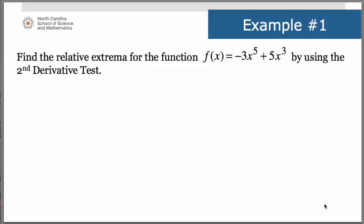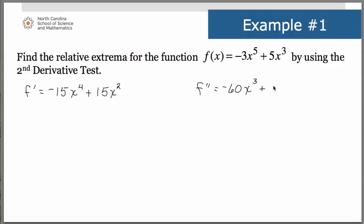Let's look at a couple of examples. In this first one we're asked to use the second derivative test to find the relative extrema for the function f(x) = -3x⁵ + 5x³. Remember the steps: the first thing we need is our first derivative, which is -15x⁴ + 15x². We are also going to need the second derivative, which is -60x³ + 30x.